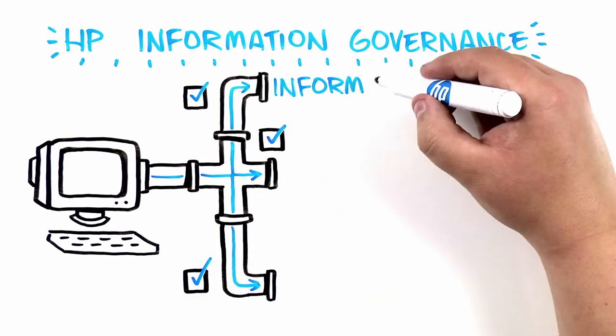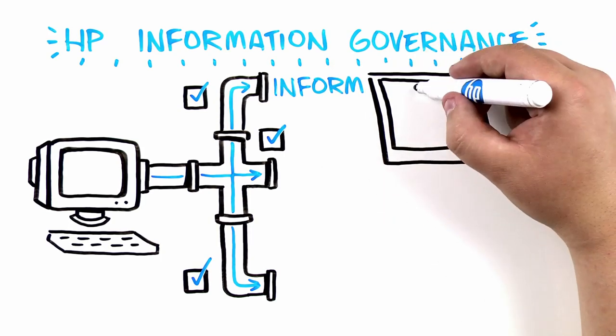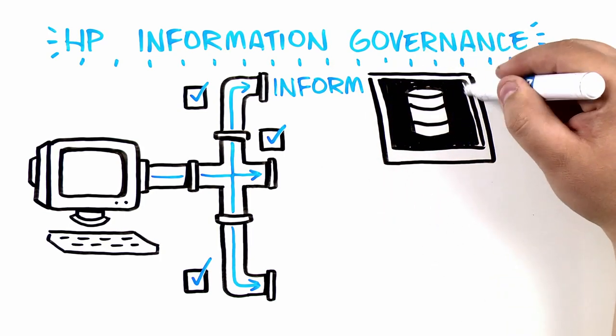1. Inform the information governance strategy by providing a snapshot of information contained in legacy data and systems.